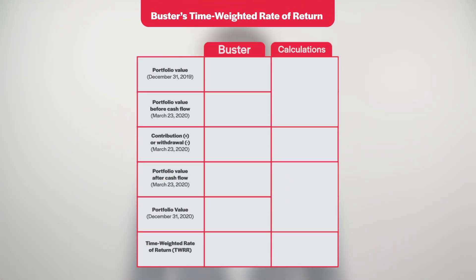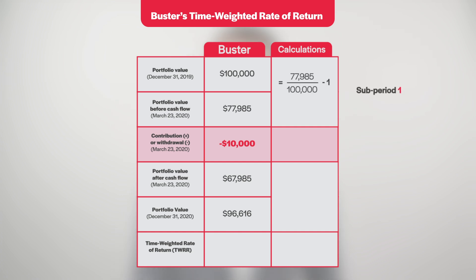Let's calculate Buster's time-weighted rate of return. He also started with $100,000 invested in VGRO at the beginning of 2020, and on March 23rd, 2020, his portfolio was also worth $77,985. On that date, he withdrew $10,000, bringing his portfolio value down to $67,985. By the end of 2020, his portfolio value stood at $96,616. Using the same calculations, Buster's sub-period 1 delivered a return of negative 22.01%. During sub-period 2, his portfolio started at $67,985 and increased to $96,616, giving a sub-period 2 return of positive 42.11%. Geometrically linking the two sub-period returns provides a time-weighted rate of return for the year of 10.83%.